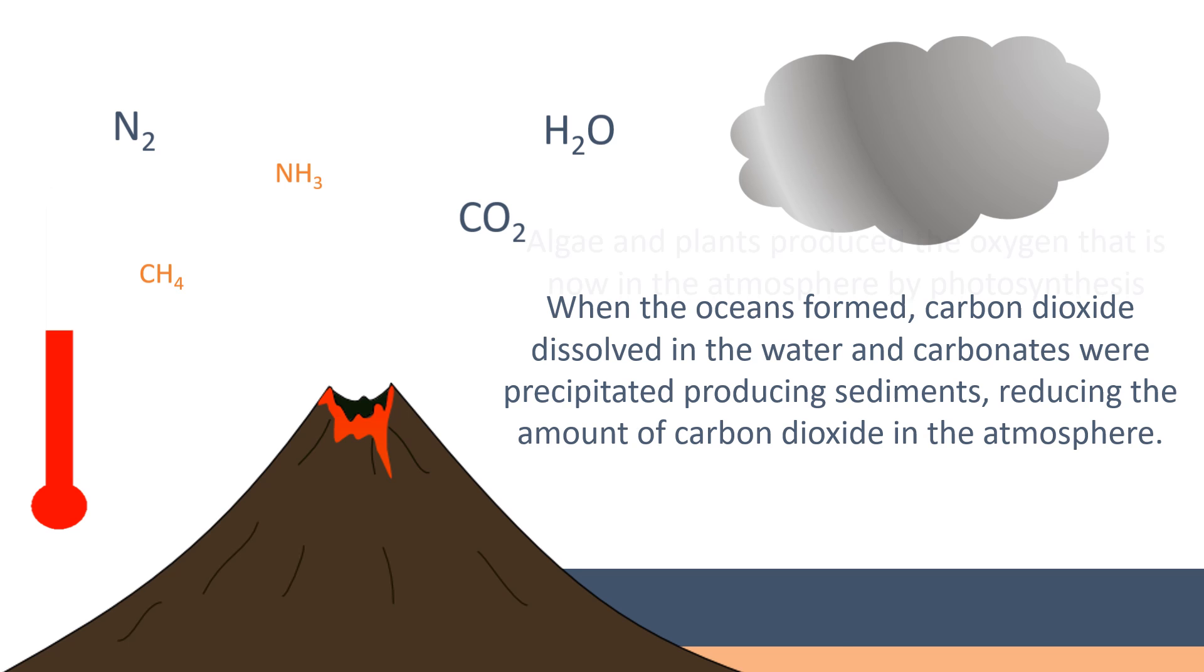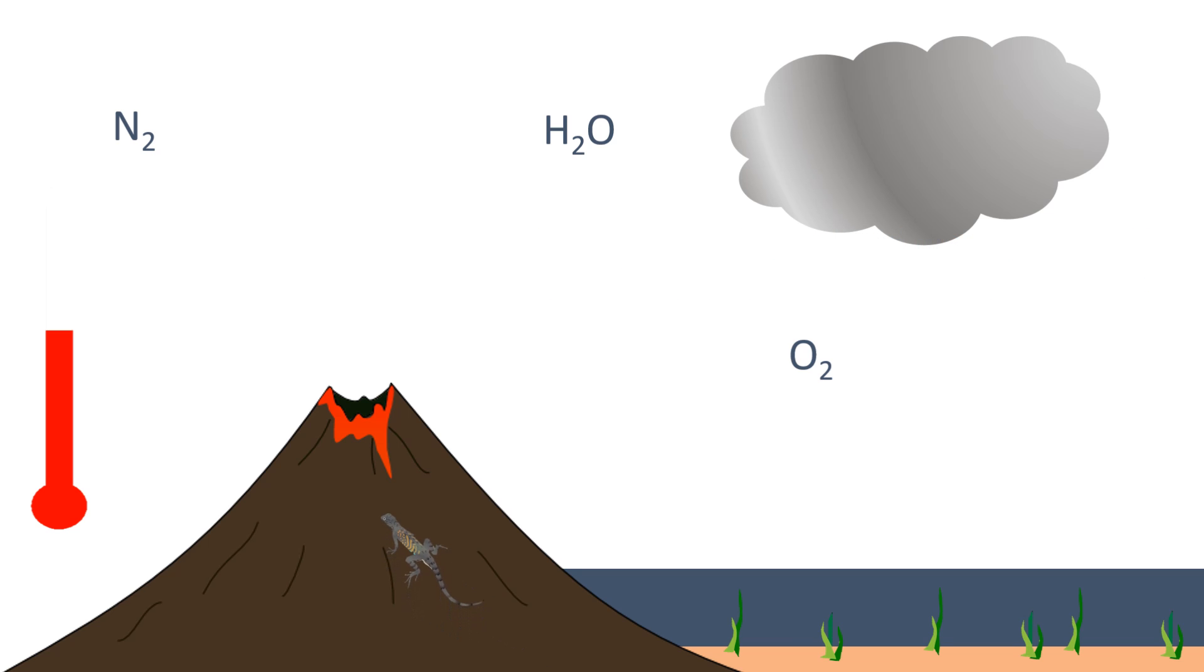The evolution of photosynthesising organisms such as algae led to the production of oxygen around about 2.7 billion years ago. As plants evolved over the next billion years, the percentage of oxygen gradually increased to a level that would support the emergence of animal life.